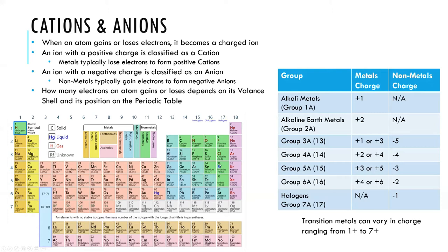Non-metals are able to gain extra electrons. They are highly electronegative and want to bring in additional electrons, and that extra negative charge means the ion itself will be a negative ion — that would be considered an anion. The majority of the different groupings have a standard charge or a standard number of electrons that will either be gained or lost. All alkali metals, for example, will lose one electron, so their ions will have a plus one charge.